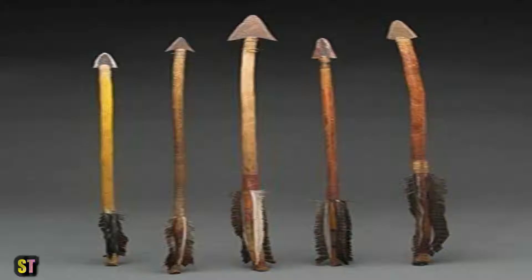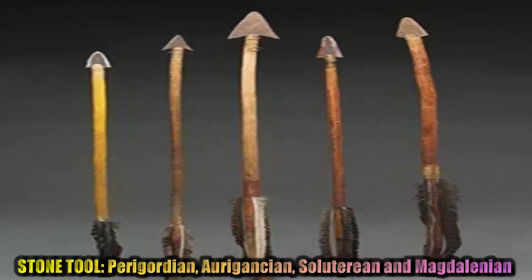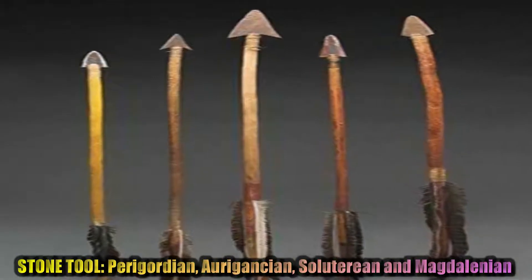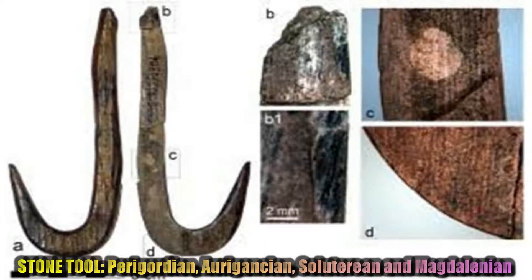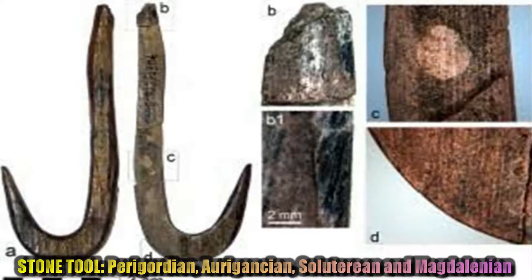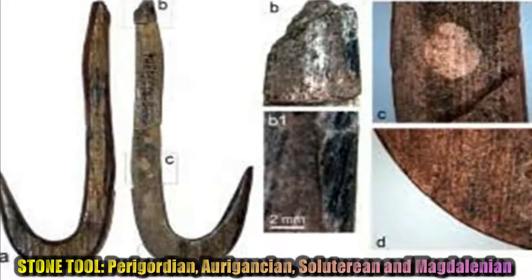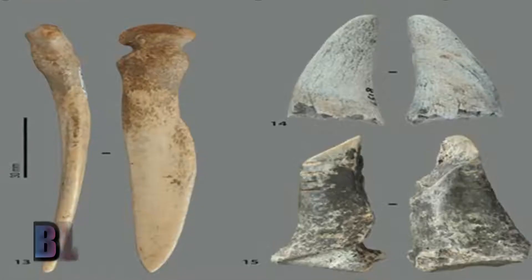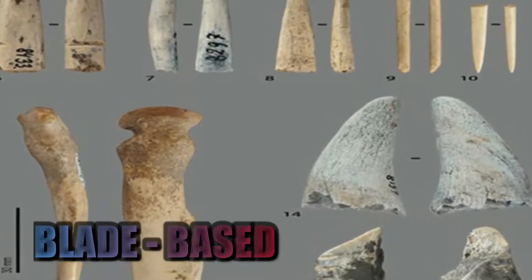Stone tool industries invented in this era were Perigordian, Aurignacian, Solutrean, and Magdalenian of Europe. These industries were mainly blade-based and became the preferred technology of the Upper Paleolithic era.